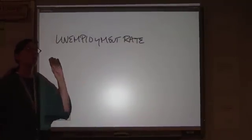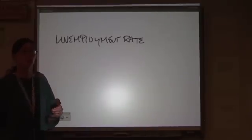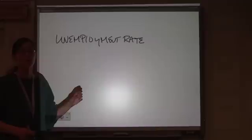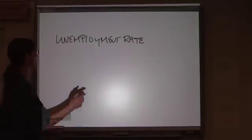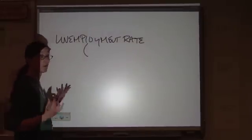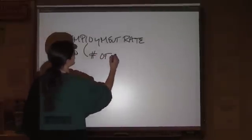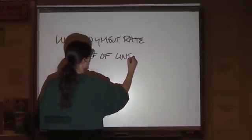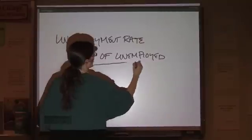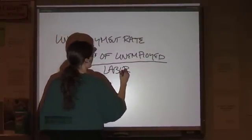The unemployment rate is a calculation of the percentage of the population that is unemployed out of the available labor force. So how do you actually come up with this percentage? The number of people who are officially unemployed divided by the number of people who are officially part of the labor force.